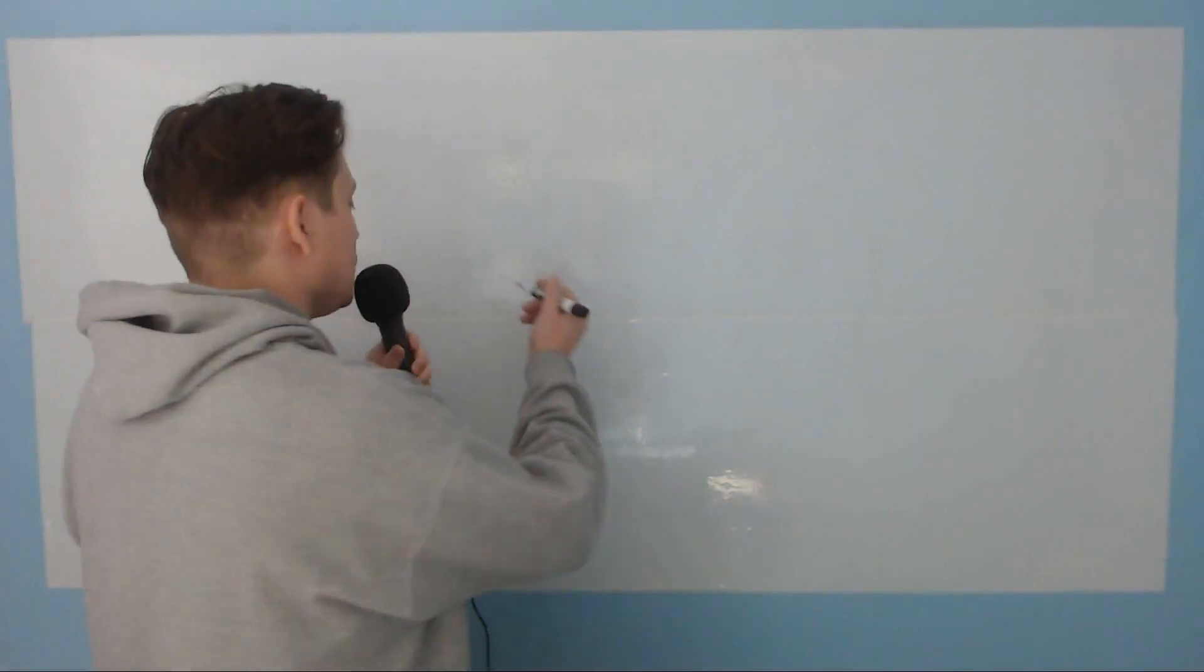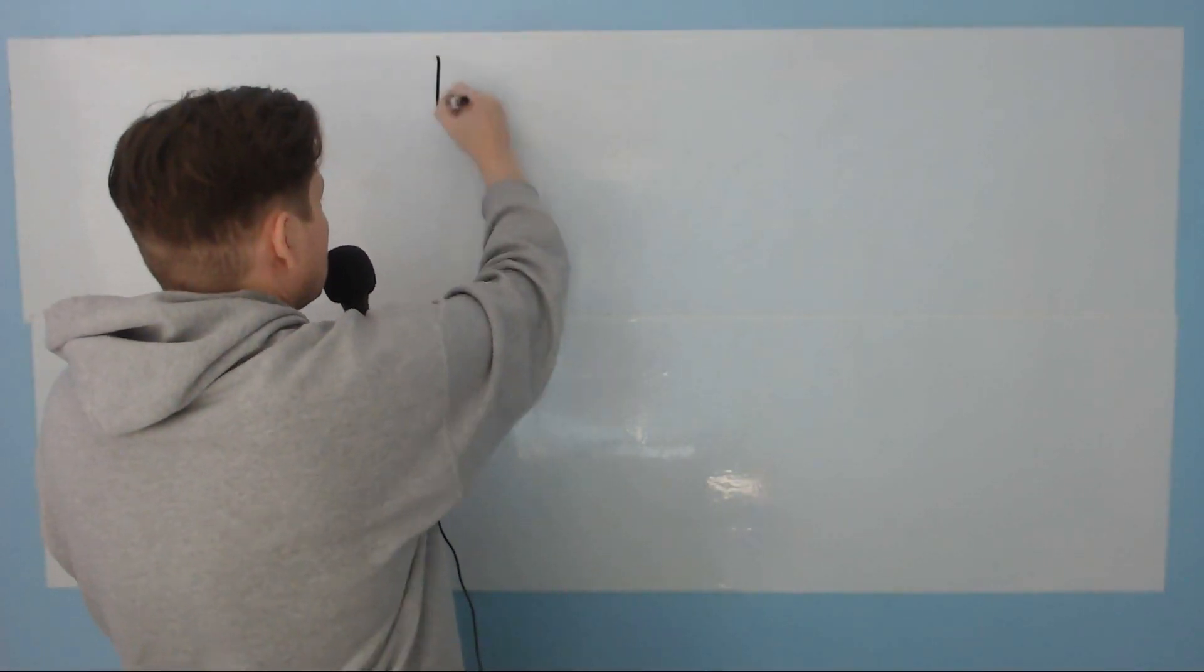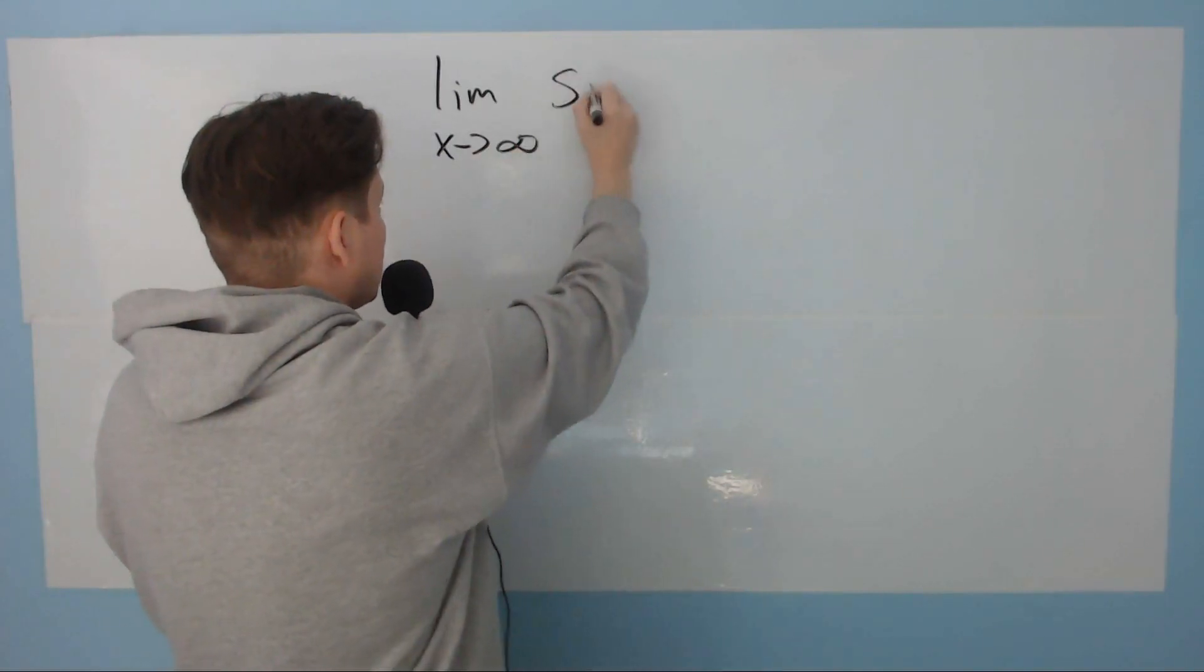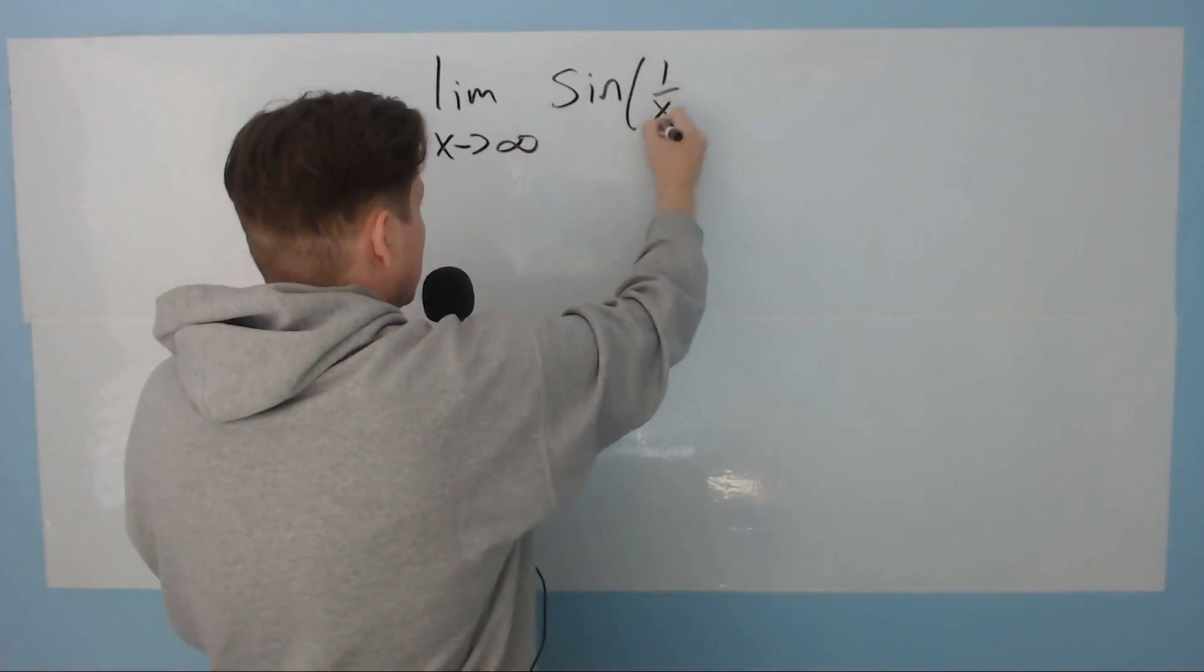In this one, let's take a look at finding a couple of different limits that involve the sine function. So the first one will have a limit as x approaches positive infinity of sine of 1 over x.